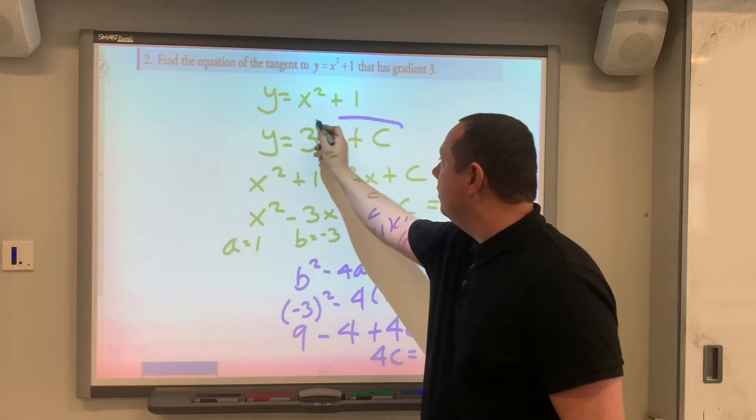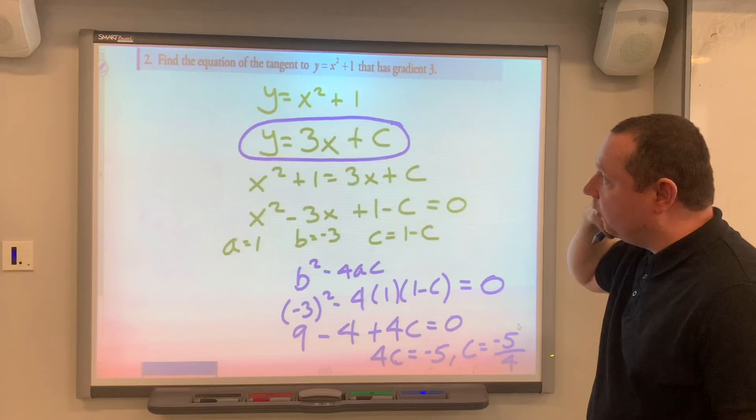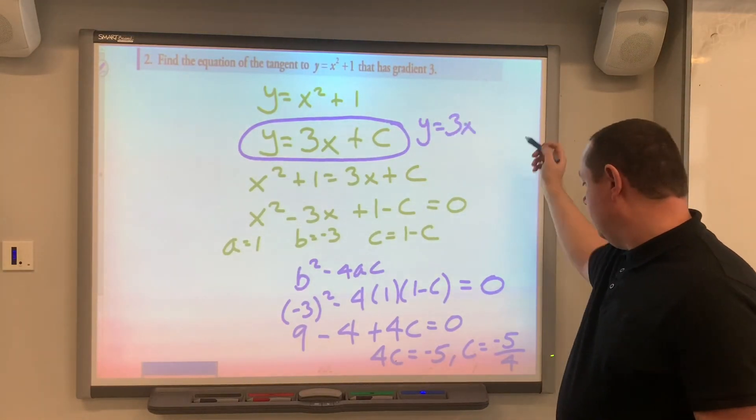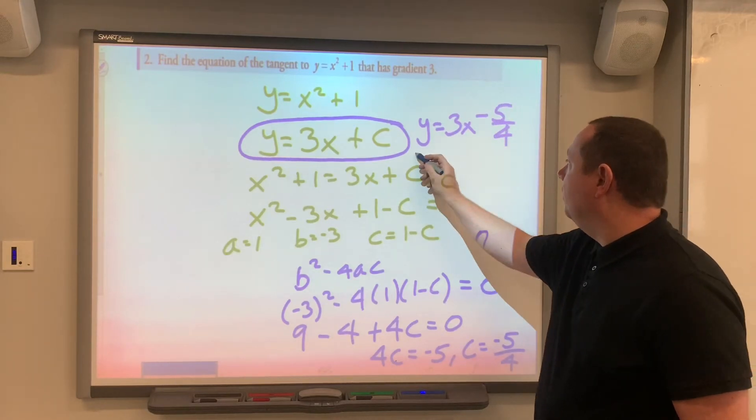So back up here, that's the equation of the tangent. The equation we don't know is 3x minus 5 over 4, and we're done.